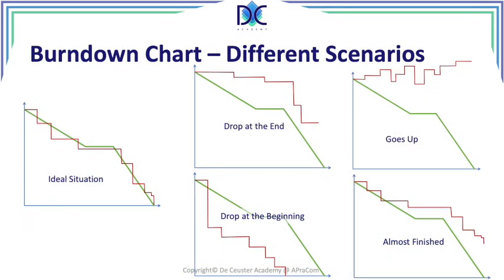When we look at burndown charts, there are different scenarios. We have the ideal situation where every sprint does approximately the work as planned. We have a drop at the end, and a drop at the beginning — which typically means we were pessimistic. When the chart goes up, it means we've been adding more elements and are not finishing work as planned. We add more things, get almost to the end, but don't complete — so the project is not done and some elements are still missing. These are different scenarios you can encounter.